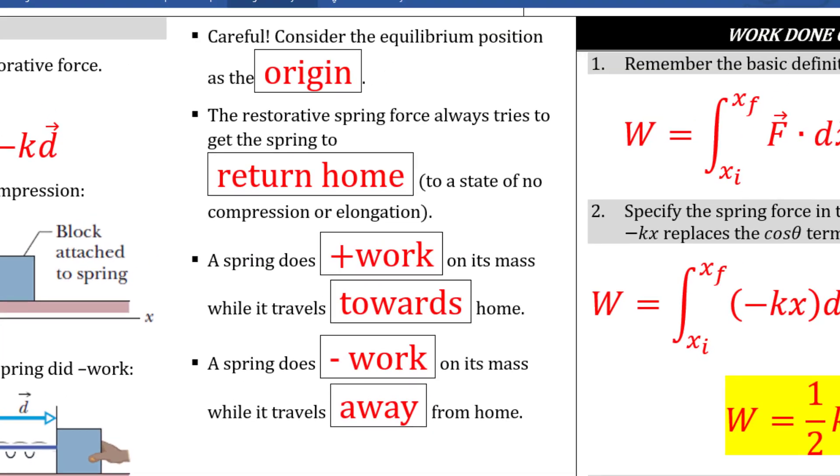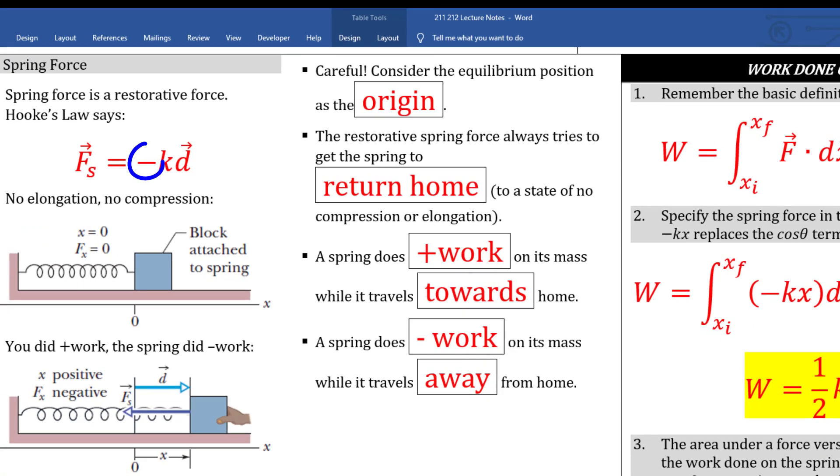Here are some useful bullets. Consider the spring's equilibrium position as the origin when you problem solve. Springs are restorative. That's what that negative sign means in Hooke's Law. Springs always want to go home to a state of no compression or elongation. A spring does positive work on its mass while moving towards home. A spring does negative work on its mass while traveling away from home.